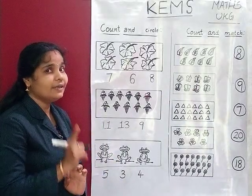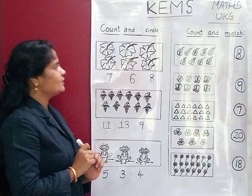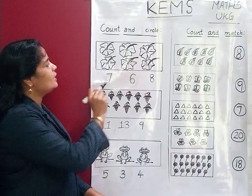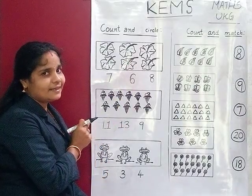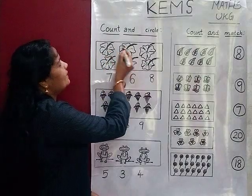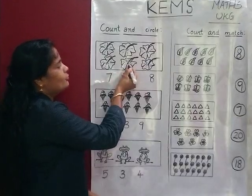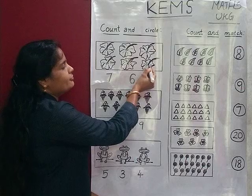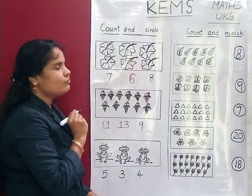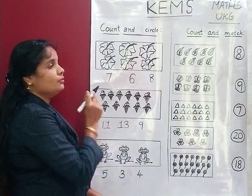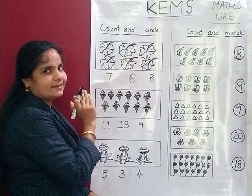You should touch and count. So children, listen — how many flowers are there? Let's count: 1, 2, 3, 4, 5, 6. There are 6 flowers. So find the number 6 and circle.